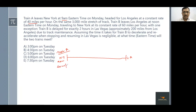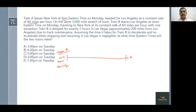After completing this first piece of information, let's move on to the next sentence: 'On the same 3000-mile stretch of track, Train B leaves Los Angeles at noon Eastern Time on Monday, traveling to New York at its constant rate of 60 miles per hour.' Let's look at what we understand from this.